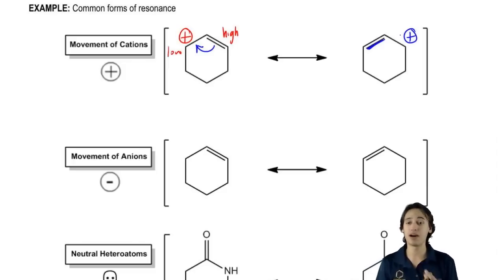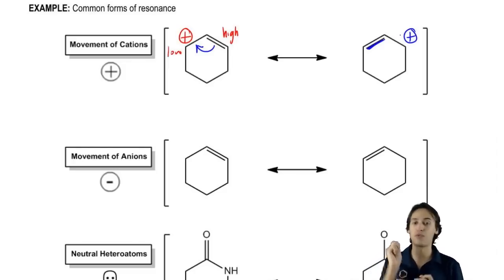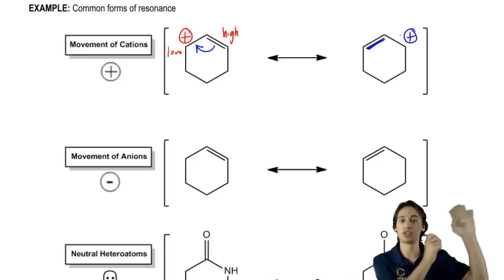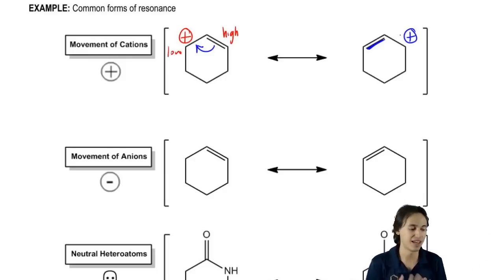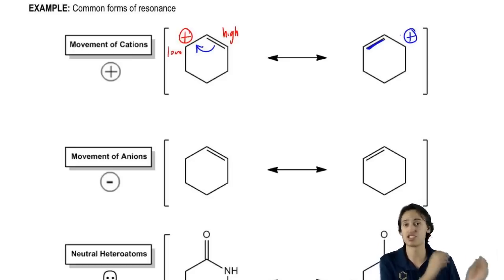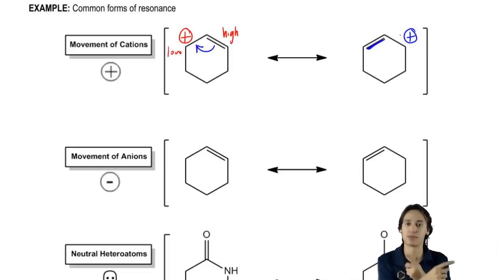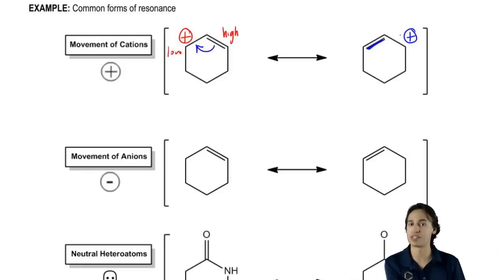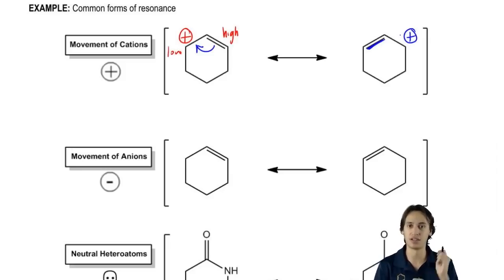What that means is that my positive is actually distributed from the left side over to the right side as well. So anytime you have a positive charge next to a double bond, it can be represented by both of these drawings — it's not just going to stay in one place. By laws of chemistry, it's going to wind up switching places. The real molecule looks like an average or combination of both. The best representation is by hybridizing both of these.